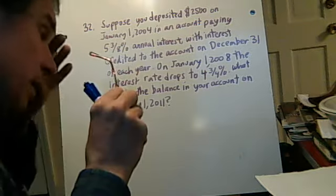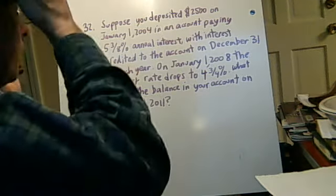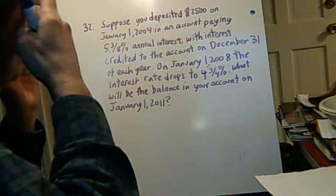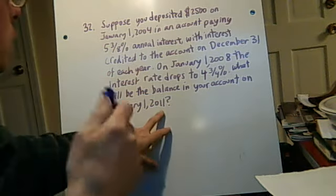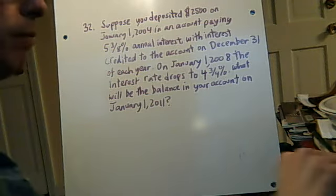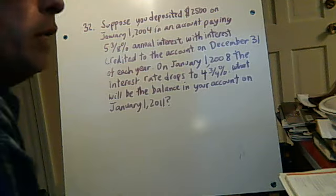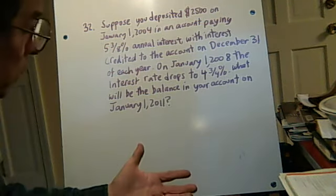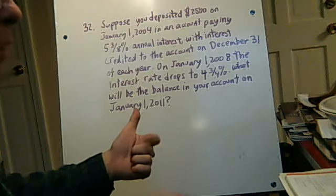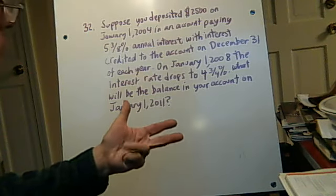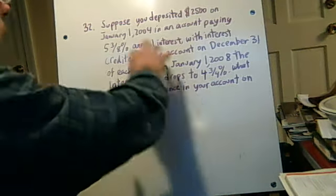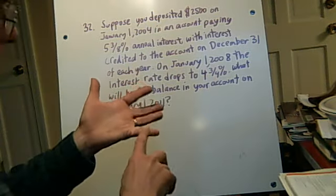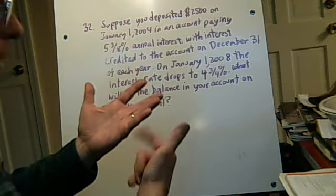So basically, money's going to sit there from January 1, 2004 until 2011 — that's seven years. You never take any out or add any more in. For the first four years, that's from 2004 to 2005, 2006, 2007, and 2008, it's going to get a certain interest rate. And then for the last three years, it's going to get a different interest rate.